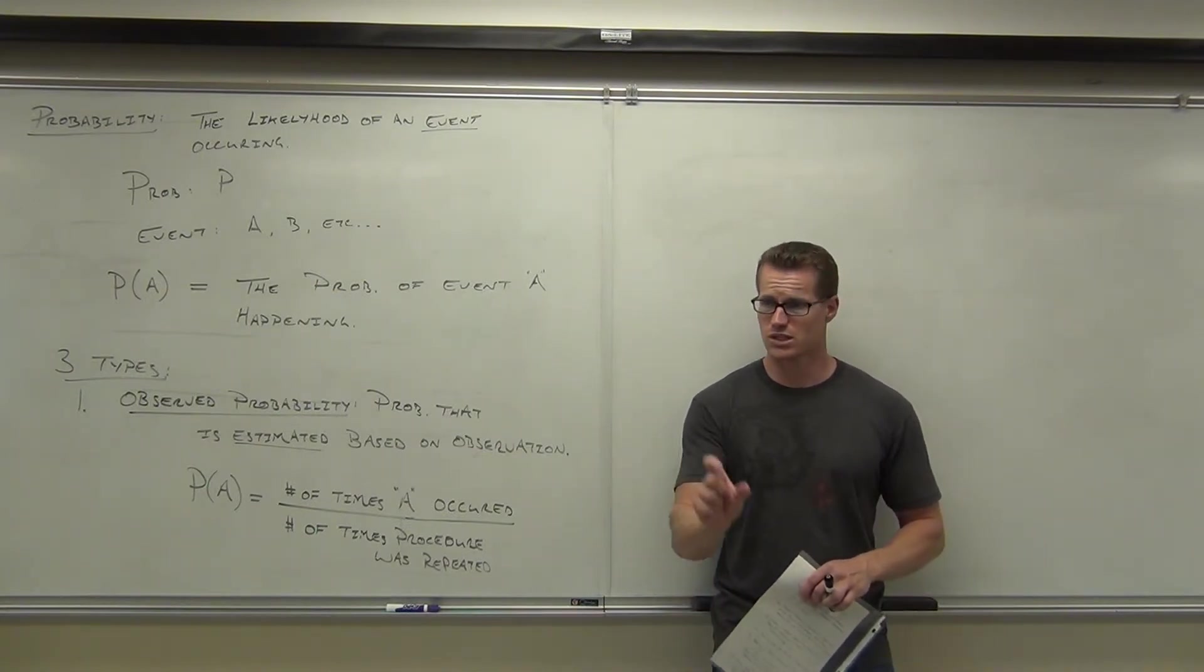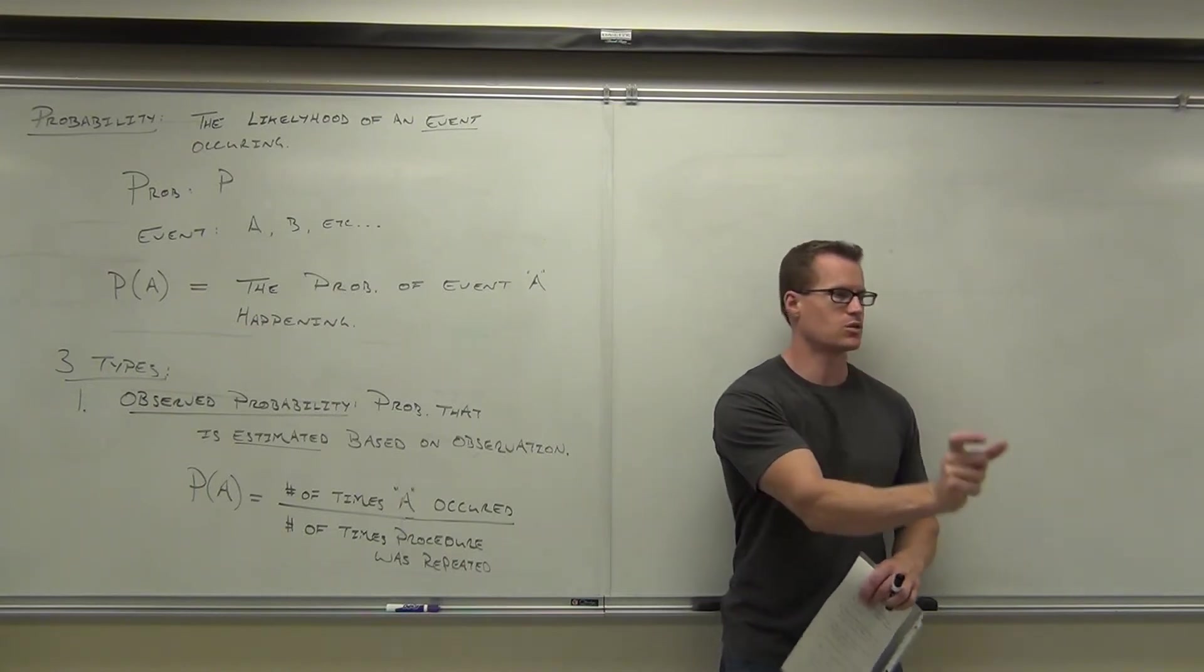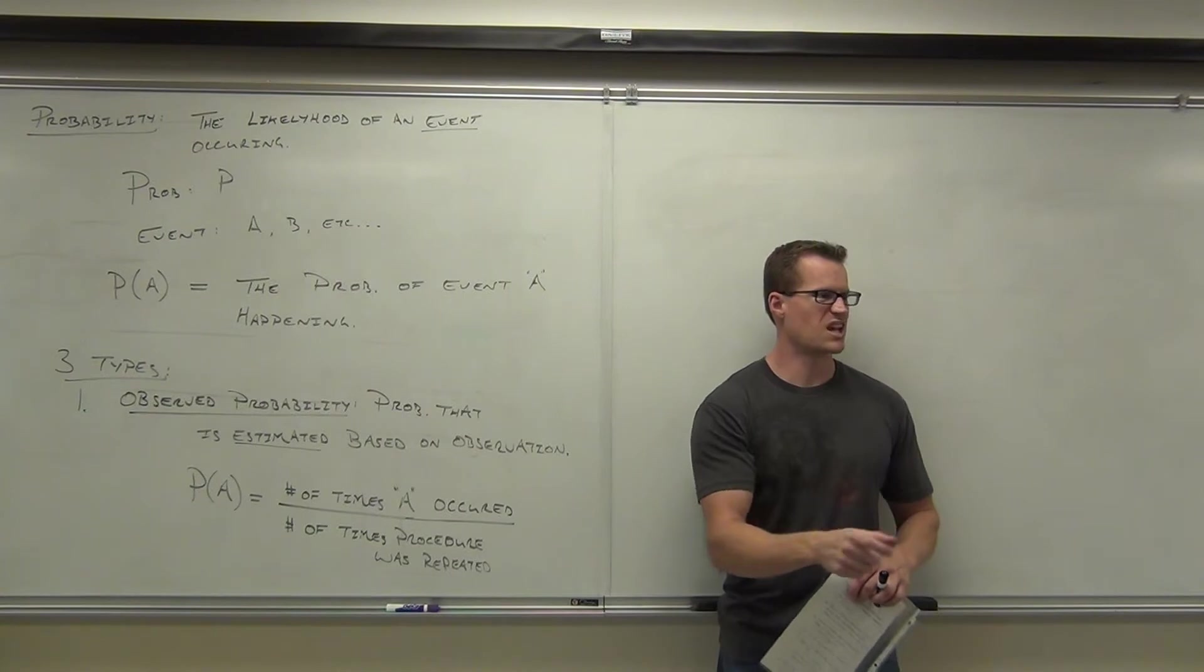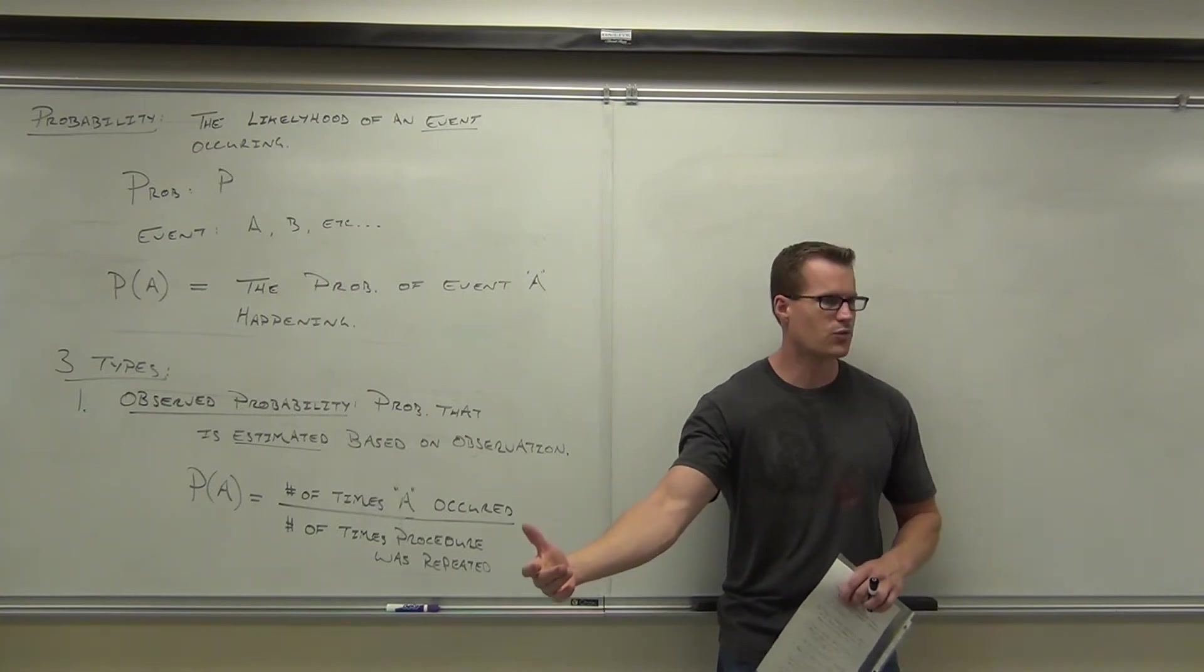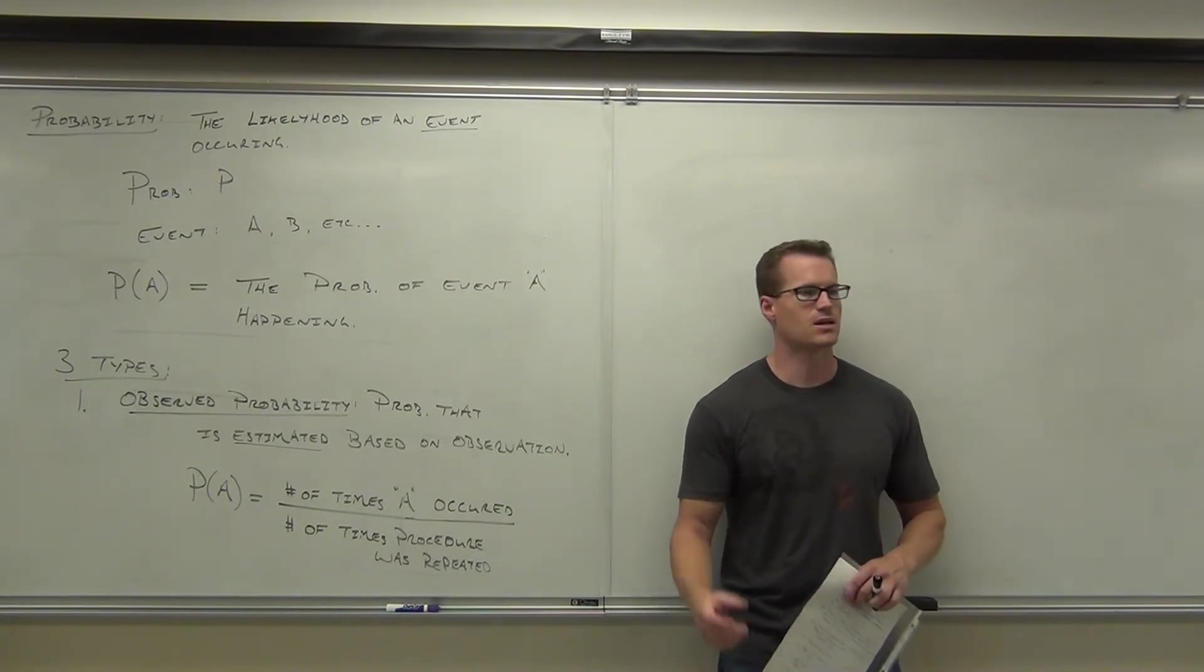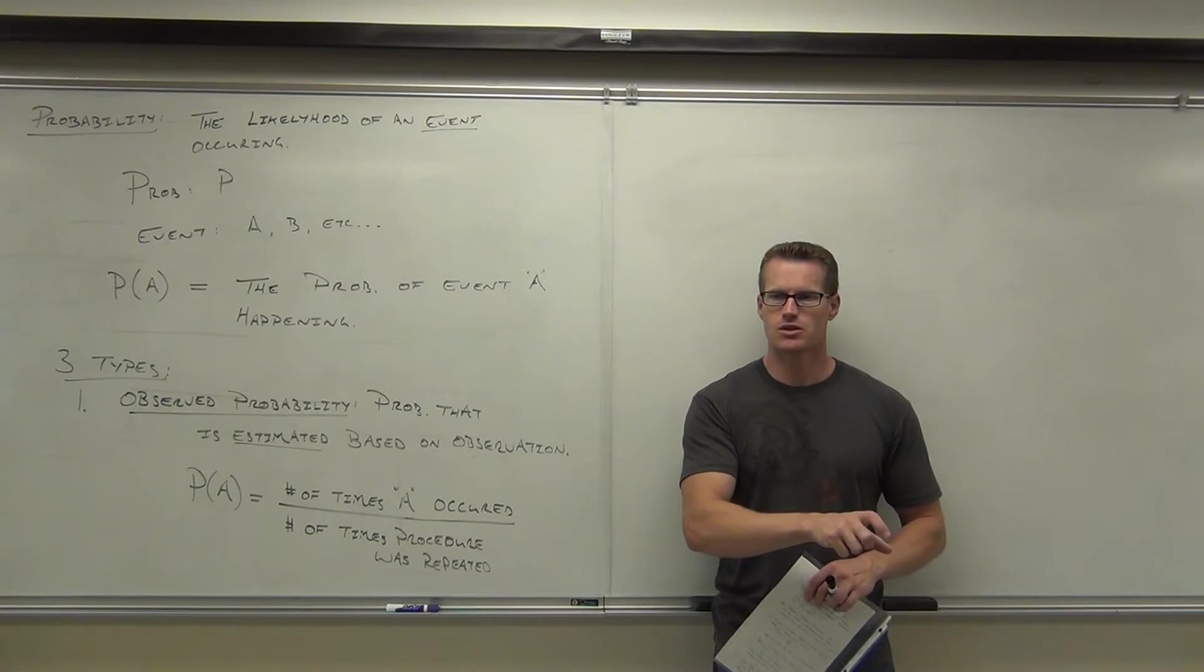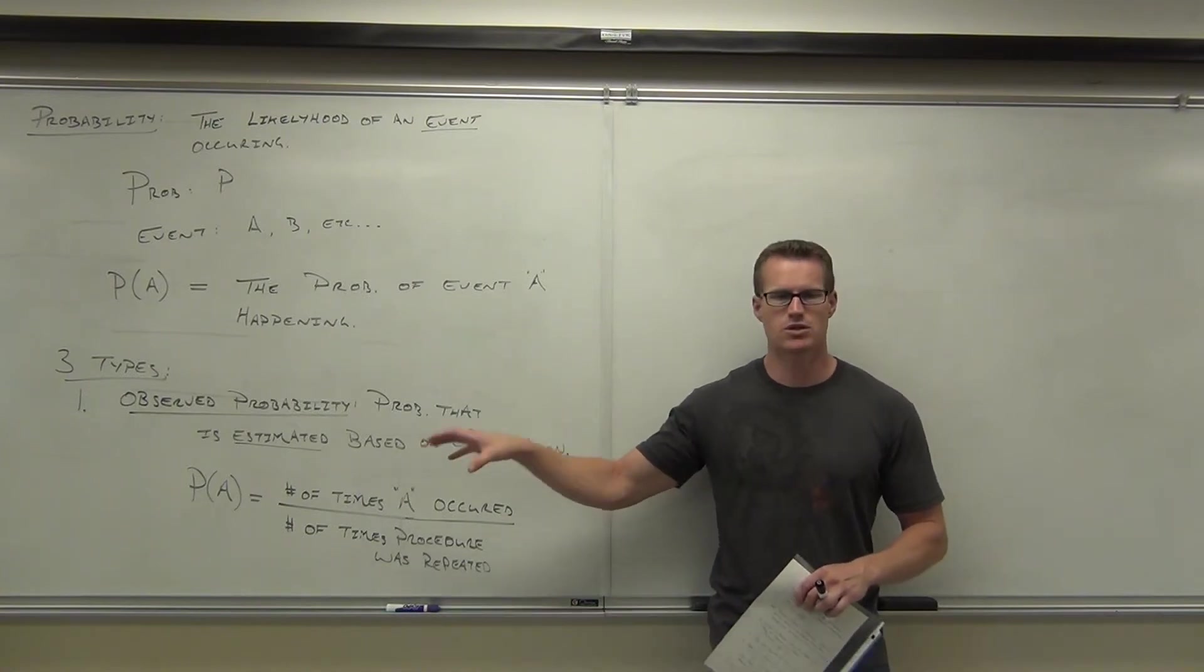So it's what someone's actually done, and then you take that and you estimate it and apply it towards their future. If you hit the ball 8 times out of every 24 times, chances are you're going to probably continue that statistic. So when you come up to bat next, you get a one-third chance of hitting the ball. That's how you use observed probability.